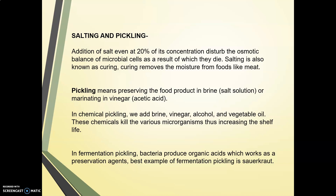Pickling means preserving food in brine (salt solution) or marinating in vinegar or acetic acid. There are two types of pickling: chemical pickling and fermentation pickling. In chemical pickling, brine, vinegar, alcohol, or vegetable oil is added, killing various microorganisms and increasing shelf life. In fermentation pickling, bacteria produce organic acids which act as preservation agents. The best example of fermentation pickling is sauerkraut — pickled cabbage. Fermentation pickling is one of the biological methods of food preservation.